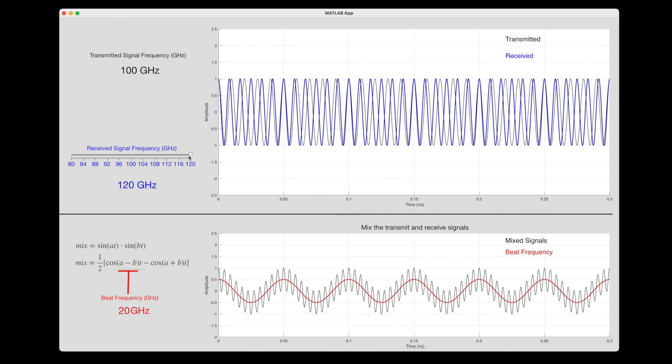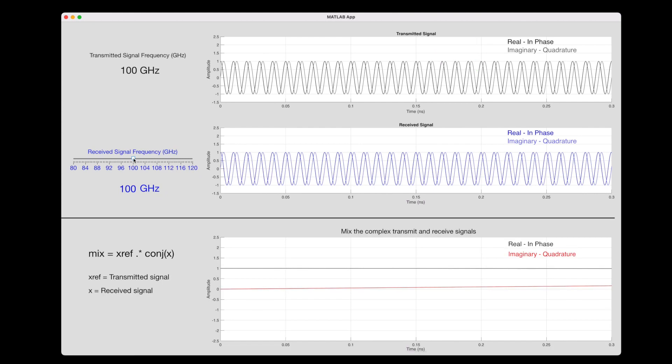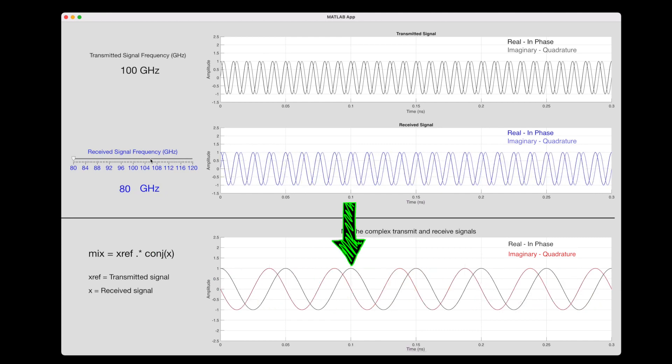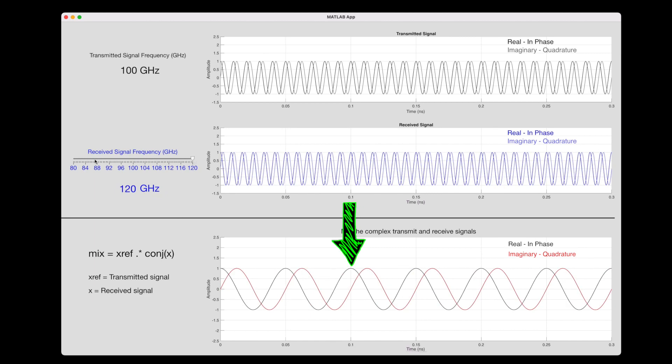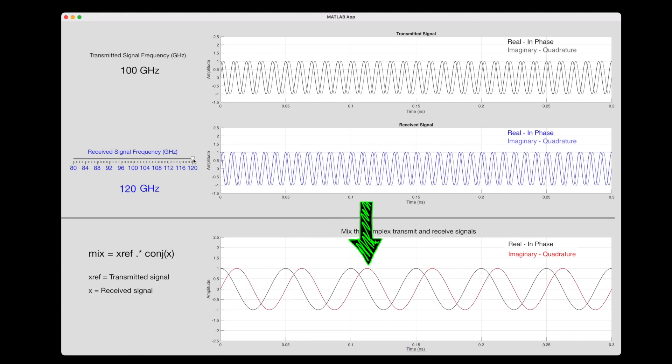This is where radar systems with complex stages come into play. Imagine that the radar sends out two orthogonal signals that are separated by 90 degrees of phase, so-called IQ signals. The IQ comes from the fact that the real component is called in phase, and the imaginary component is called quadrature. By generating these complex signals, we can now determine the direction of the object. When we mix the transmit and receive signals, we get another complex signal where both components oscillate at the beat frequency. Notice that when I toggle between 80 and 120 gigahertz, the in phase component doesn't change, but the quadrature component does. Therefore, by checking which signal is leading in phase, we can determine direction.